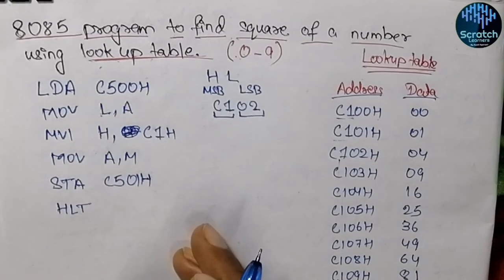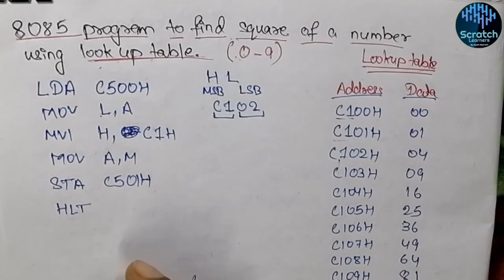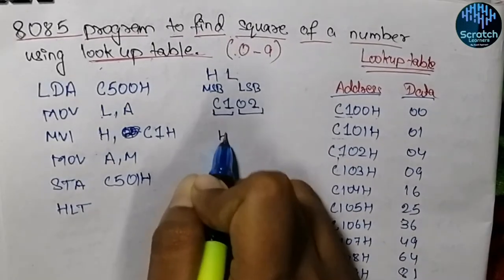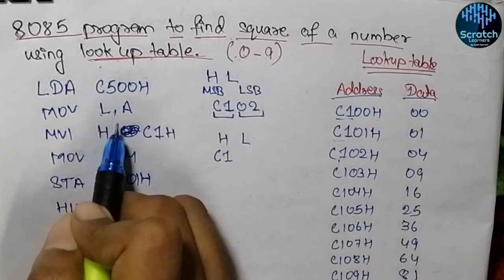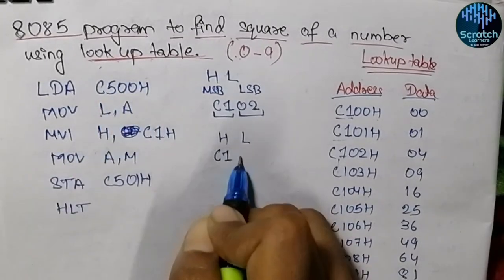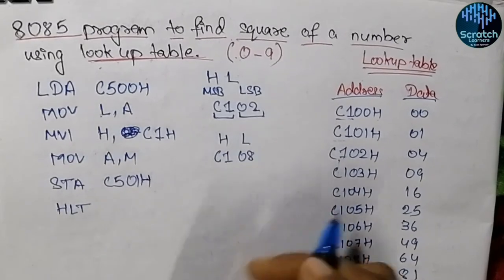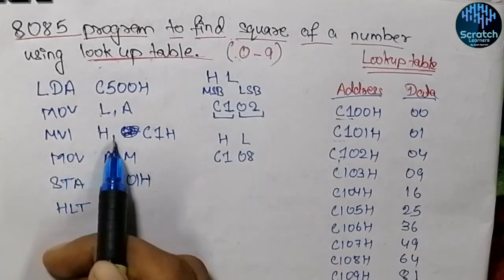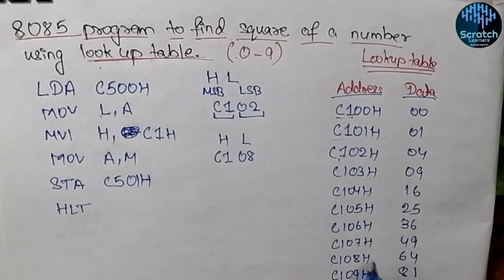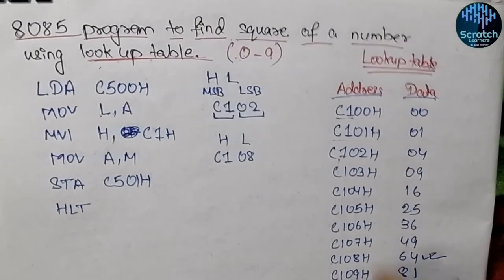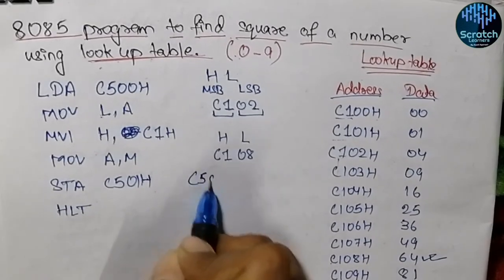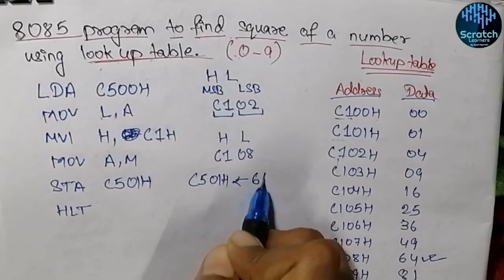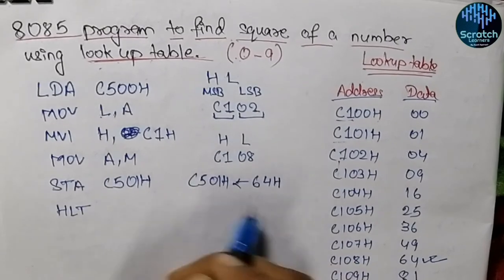Let's see an example. If we want to calculate the squared value of 8, the H register will be C1 and the L register will be 08H. We go to address C108H and fetch the squared value, which is 64, into the accumulator. Then we store 64H into address C501H.